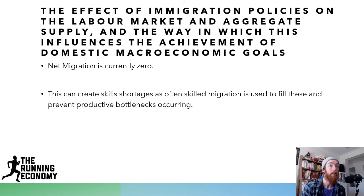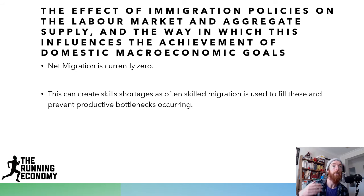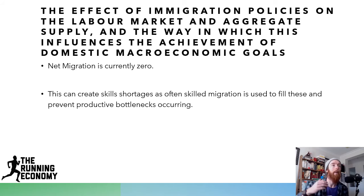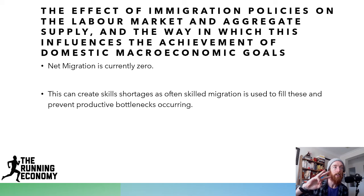Immigration policy at the moment will likely only be asked in a theoretical sense because net migration has been basically zero. We usually use skilled migration to alleviate skill shortages and alleviate productive bottlenecks occurring, but we haven't been doing this because international borders are closed. Our three main types of migration are special migration, family migration, and skilled migration — three important things, but not really relevant at the moment.